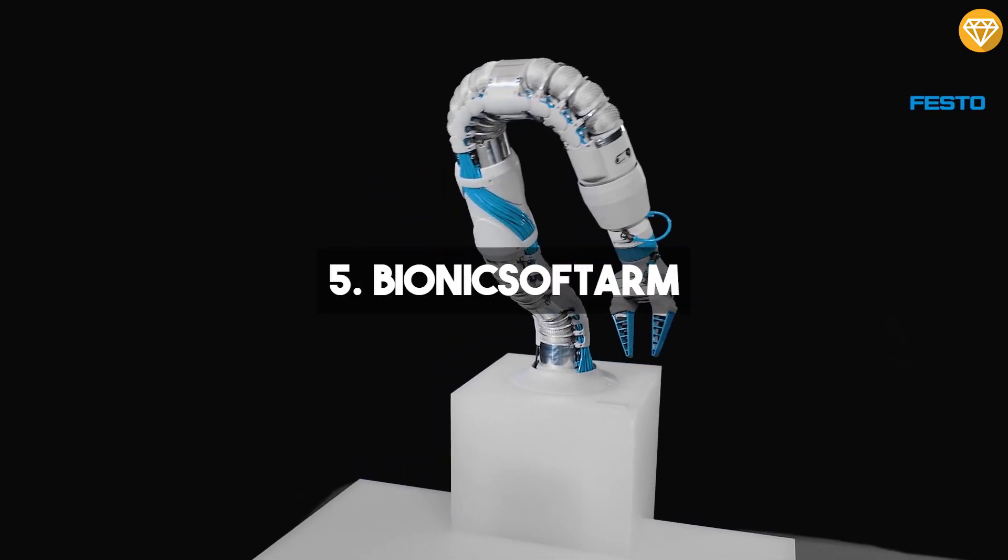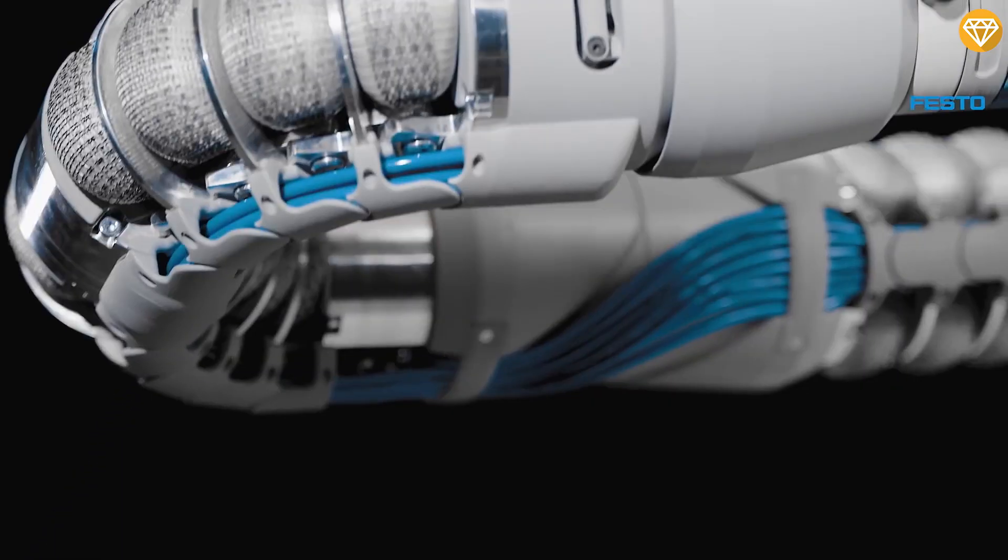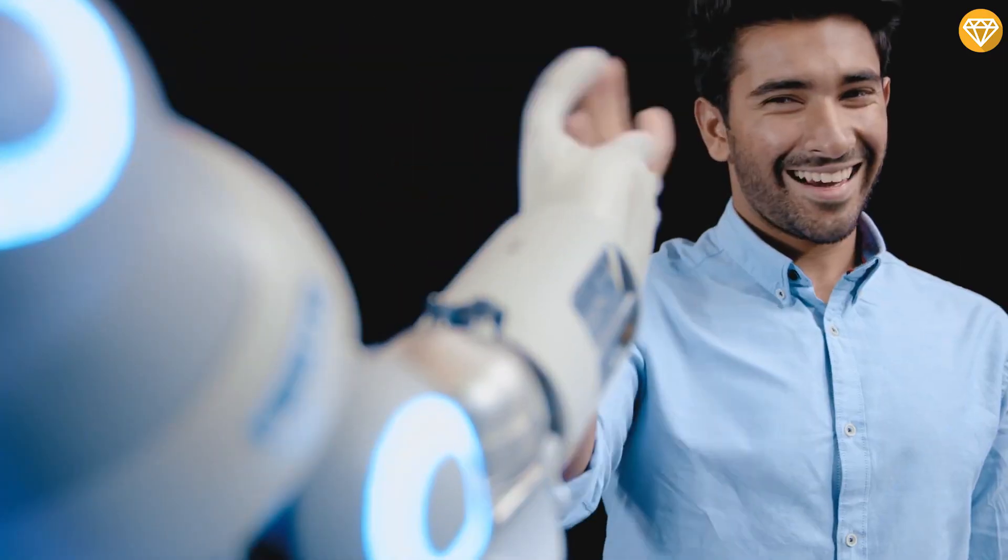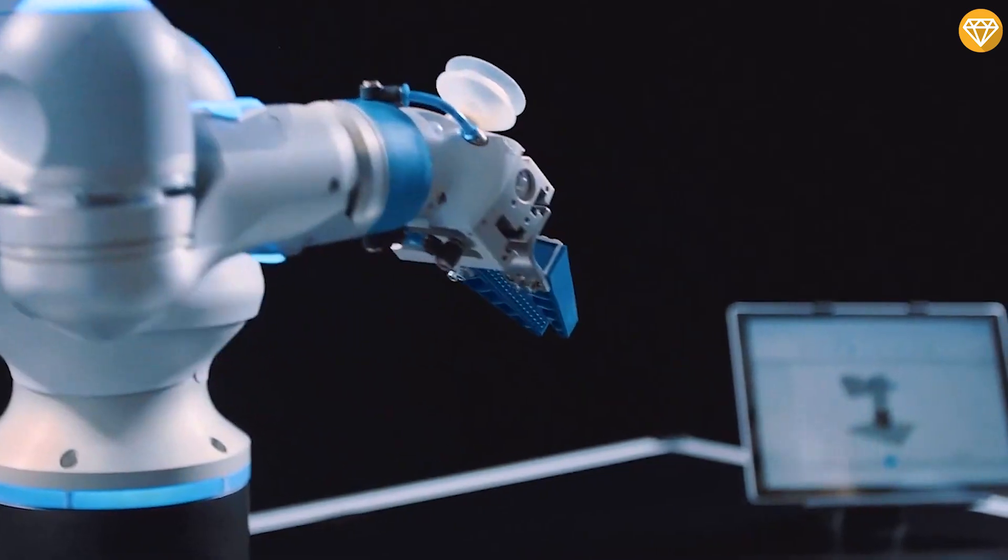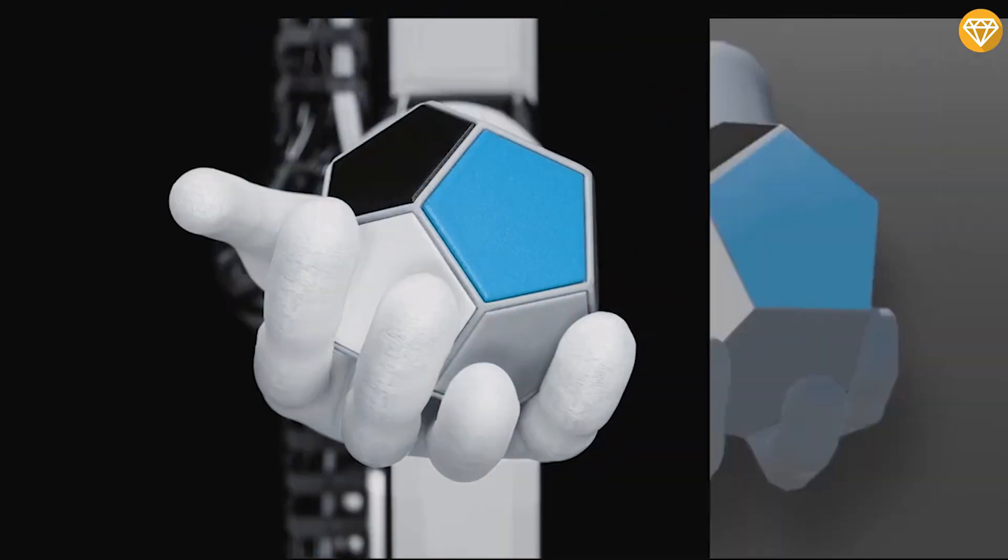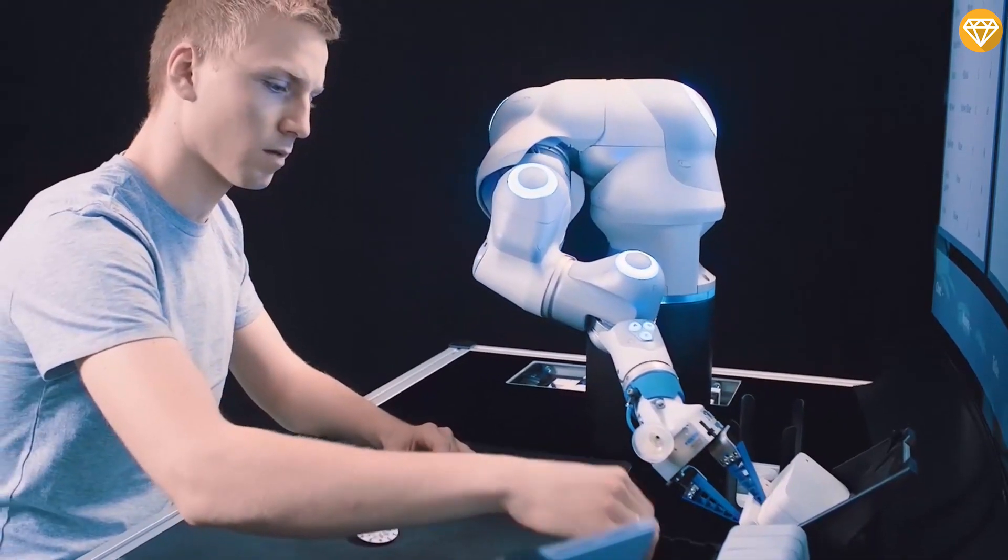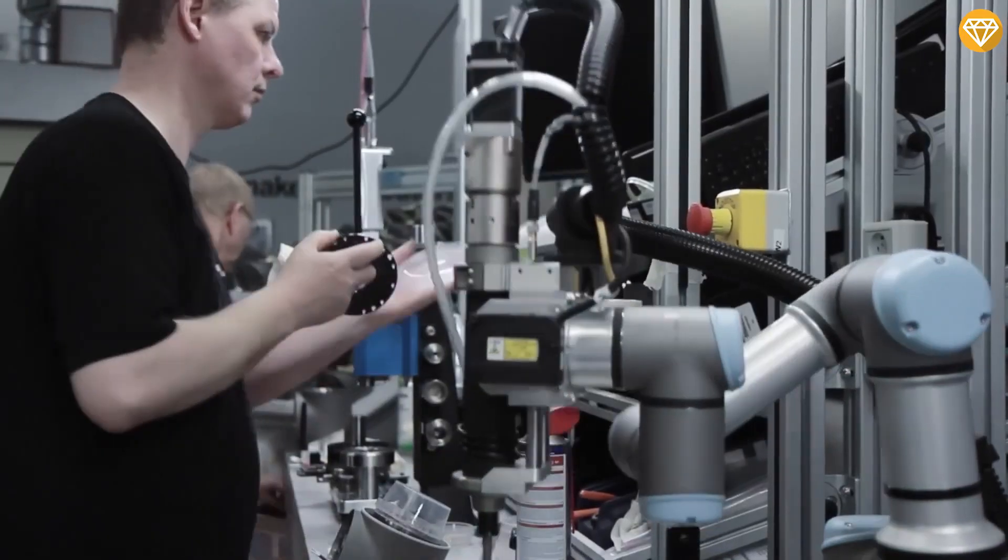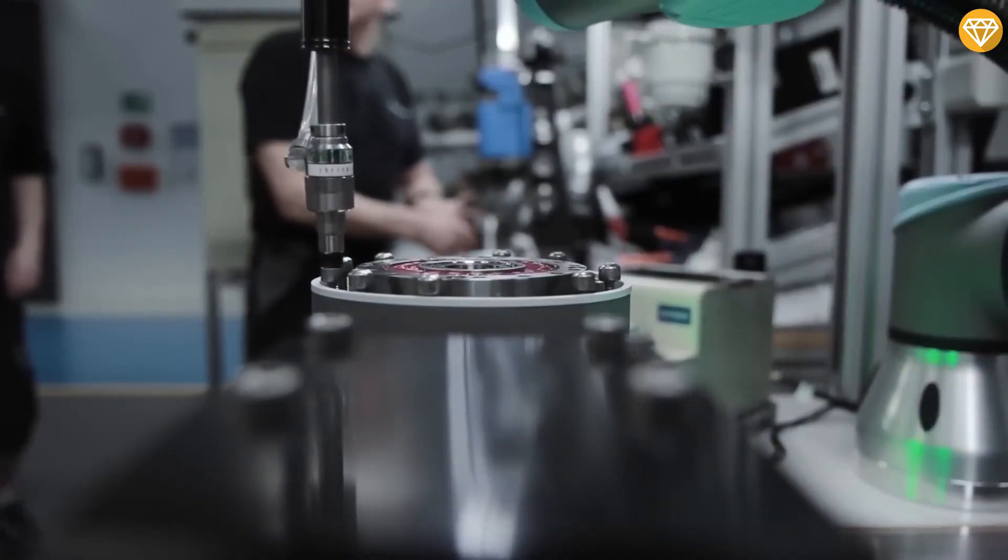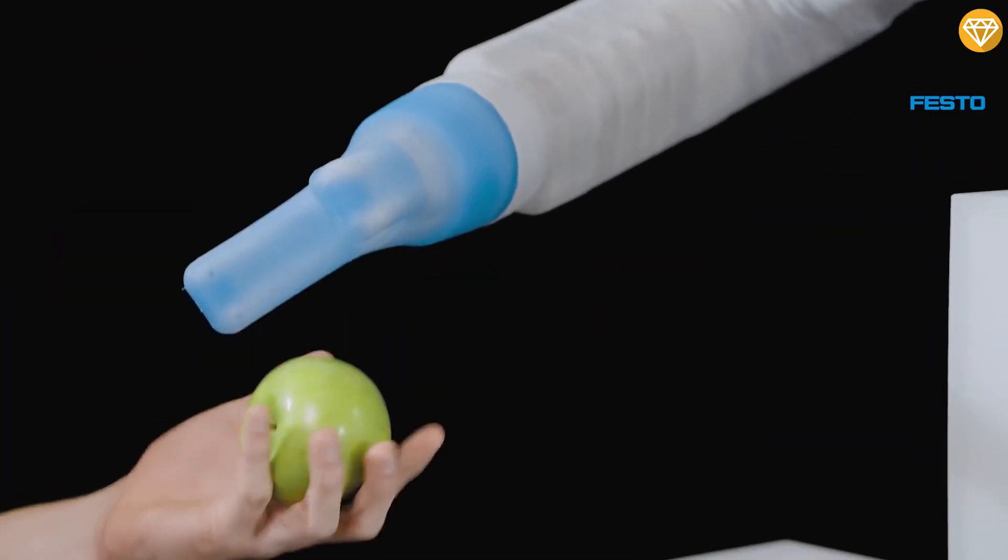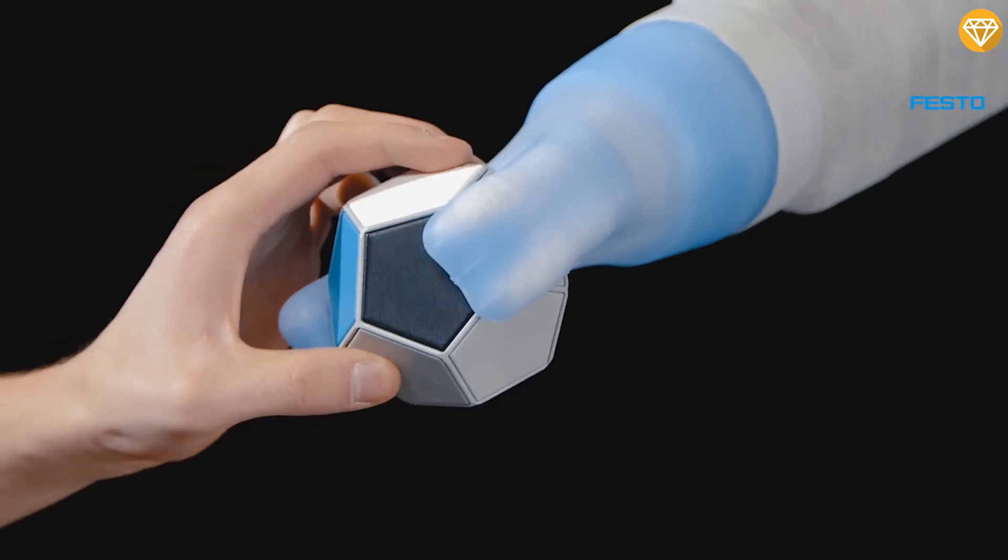Number 5, Bionic Soft Arm. The Bionic Soft Arm is a modular pneumatic lightweight robot that offers flexible movements and can be used for various applications. With adaptive grippers it can handle diverse objects safely. Its modular design allows easy customization and integration, providing flexibility and adaptability. The Bionic Soft Arm can navigate tight spaces and perform pick and place tasks.